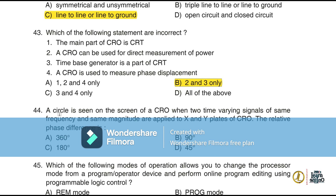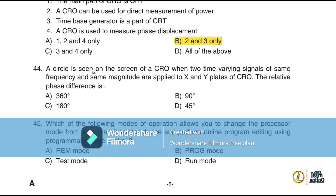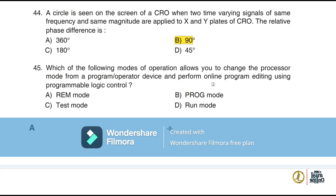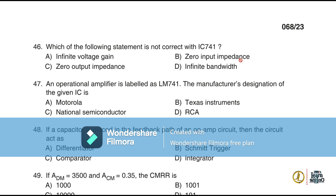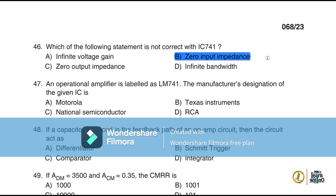Question 44: A circle is seen on the screen of a CRO when two time-varying signals of the same frequency and same magnitude are applied to the X and Y plates, with a relative phase difference of 90 degrees. Question 45: The mode of operation that allows changing the processor from program or operator device and performing online program editing using a programmable logic controller is REM mode (option A).